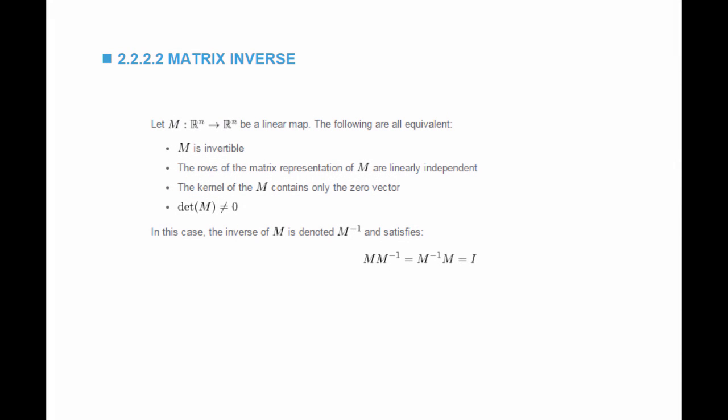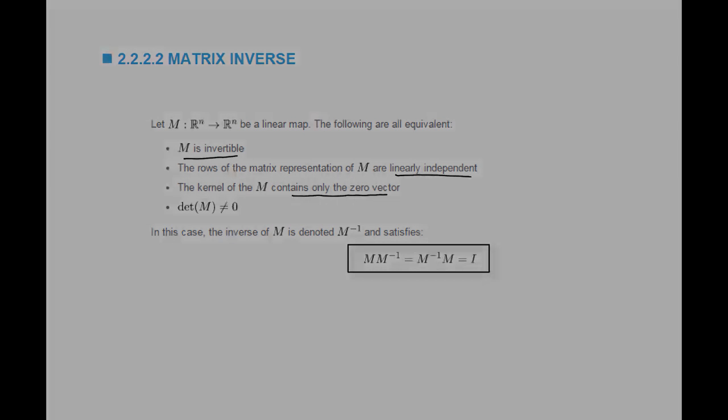We studied the invertibility of matrices, and the invertibility is determined by the determinant function, which tells me whether the rows are linearly dependent or not. The following are all equivalent: M is invertible; the rows of the matrix are linearly independent; the kernel of the matrix M contains only the zero vector; and the determinant of M is not equal to zero. In that case, the inverse of M exists, is denoted M^{-1}, and satisfies M^{-1} M = M M^{-1} = the identity matrix I.